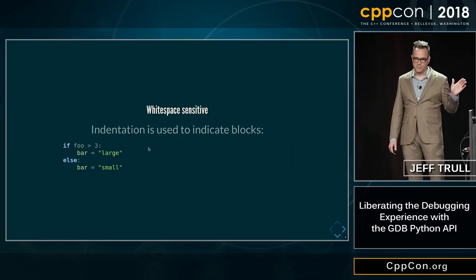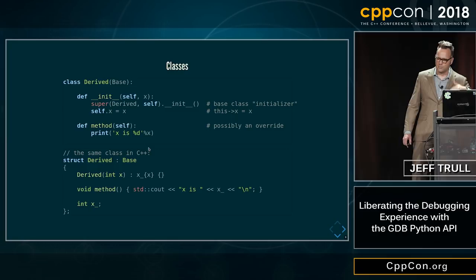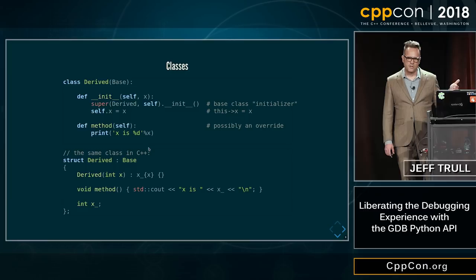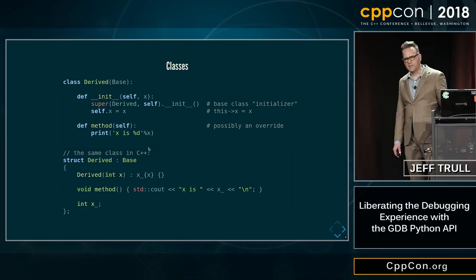Classes in Python: I put the same class as a C++ class and a Python class here to make it easier to understand. In this example, I've got a member function, some member data, and the equivalent of a constructor. Also both of these classes are derived from a base class called 'base'. You're going to find that this is a common pattern when using the GDB Python API: you take a class, derive from it, and then override some member function to accomplish your goal.